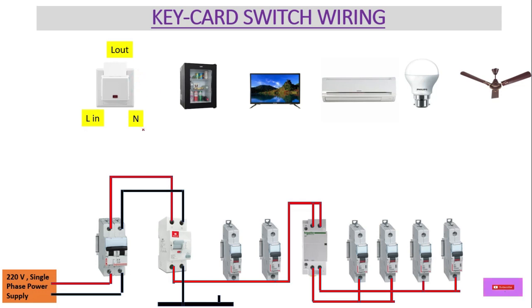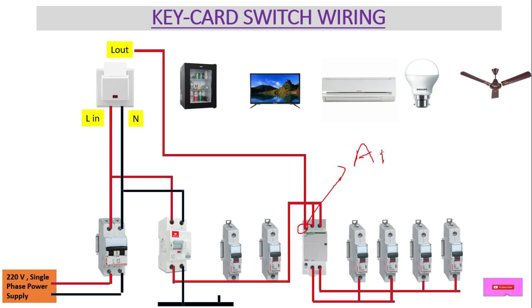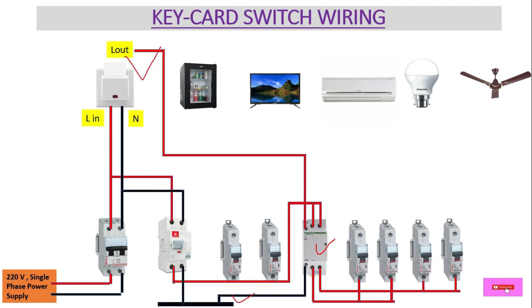Now let's come to the key card switch wiring, which is the main focus. For L-IN, we connect the phase wire to the input terminal of the key card switch, then neutral to N. From L-OUT — sometimes labeled 'Load' — it connects to the A1 coil supply terminal of the contactor. At A2, neutral is provided from the neutral busbar. In this way, the contactor coil gets its power supply controlled through the key card switch.